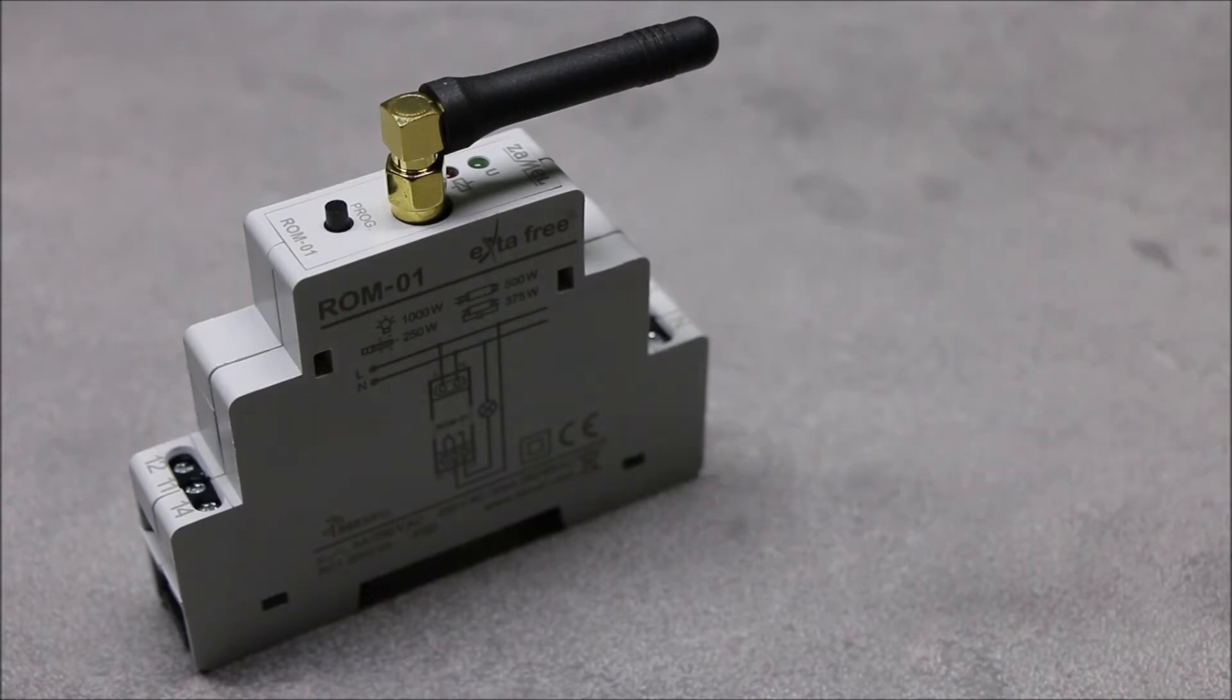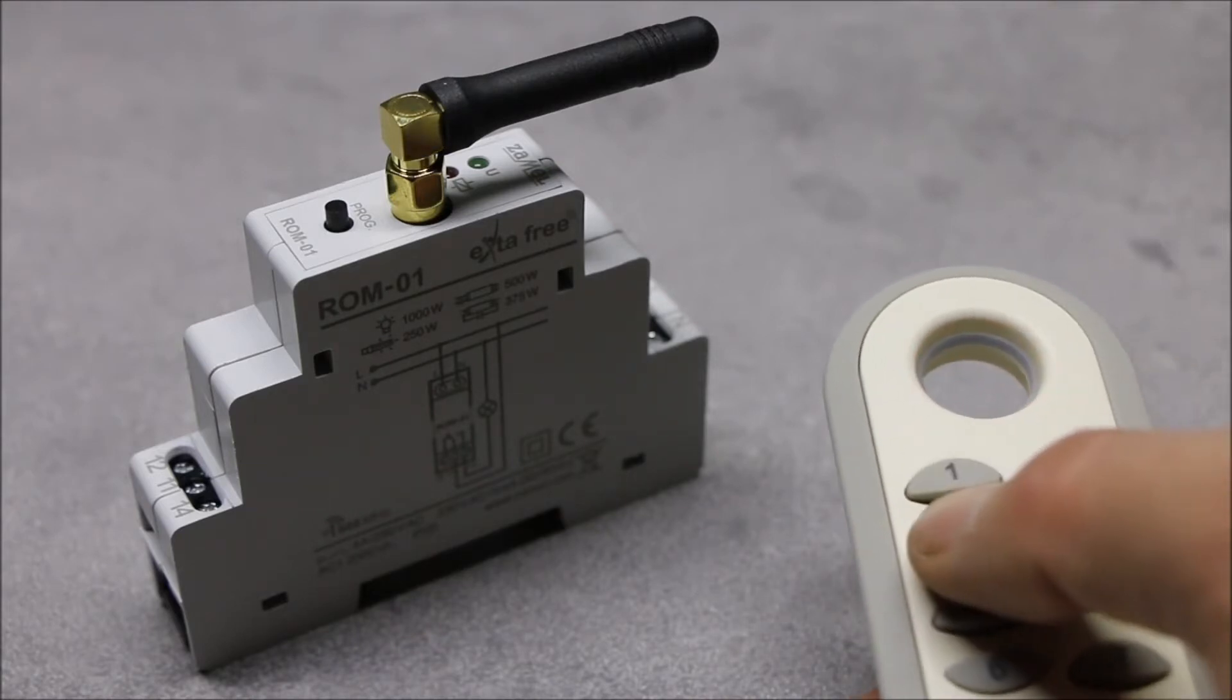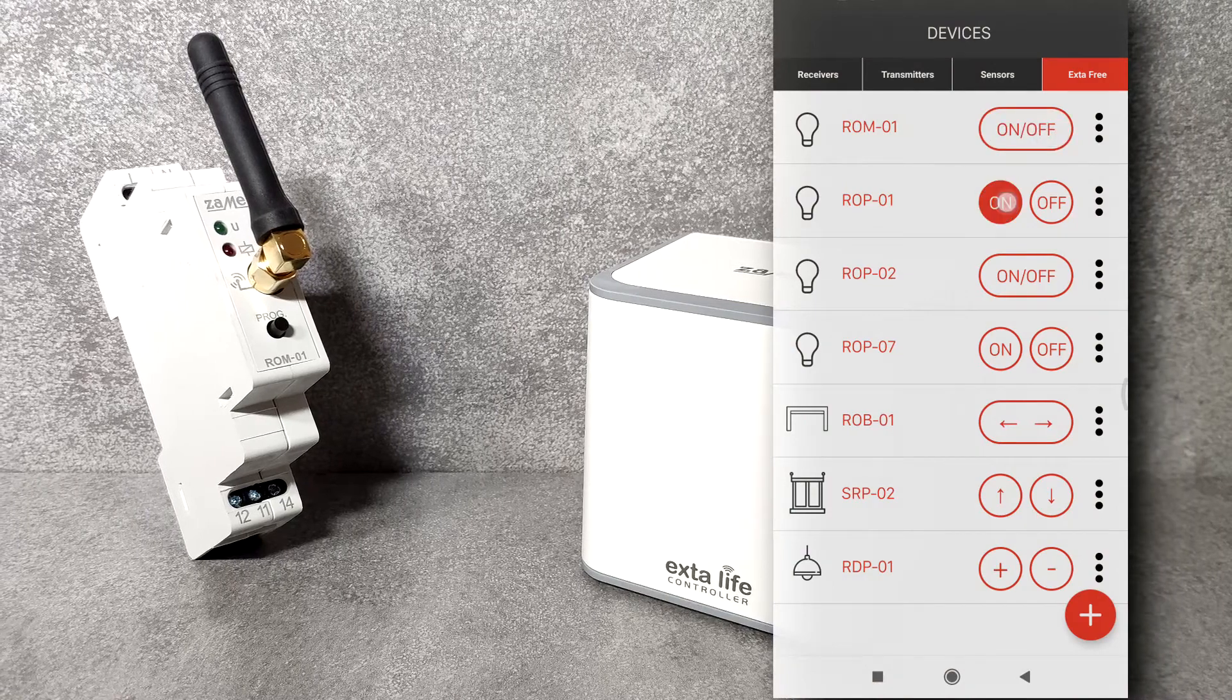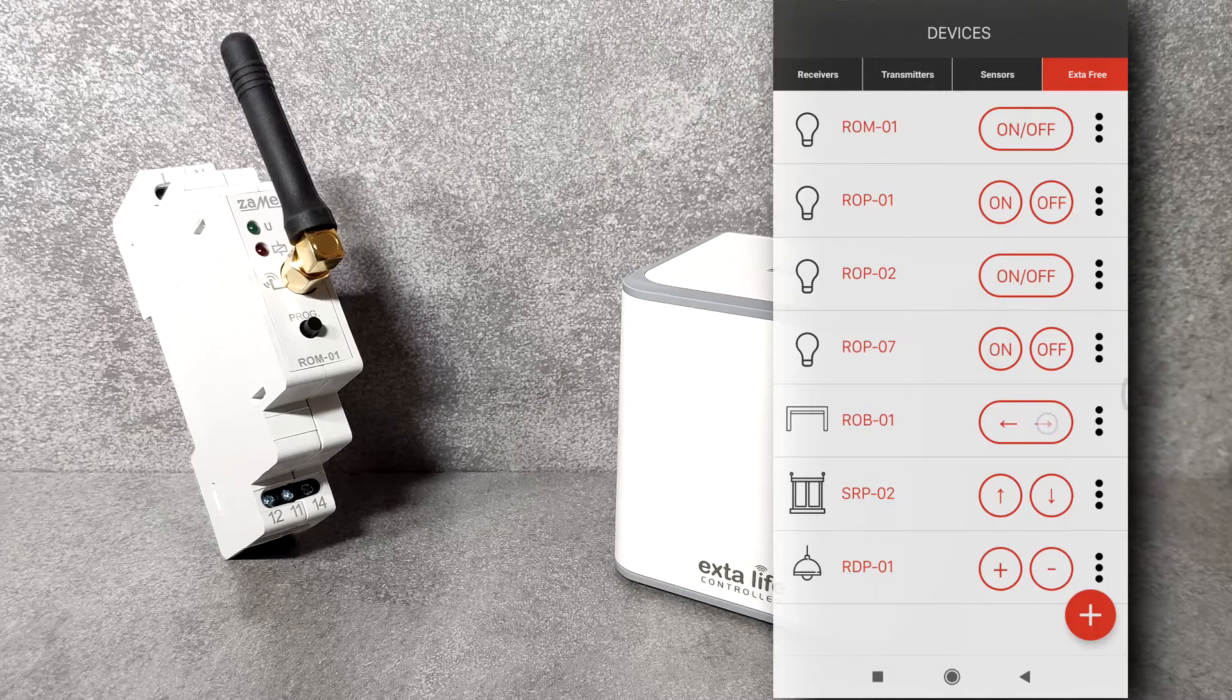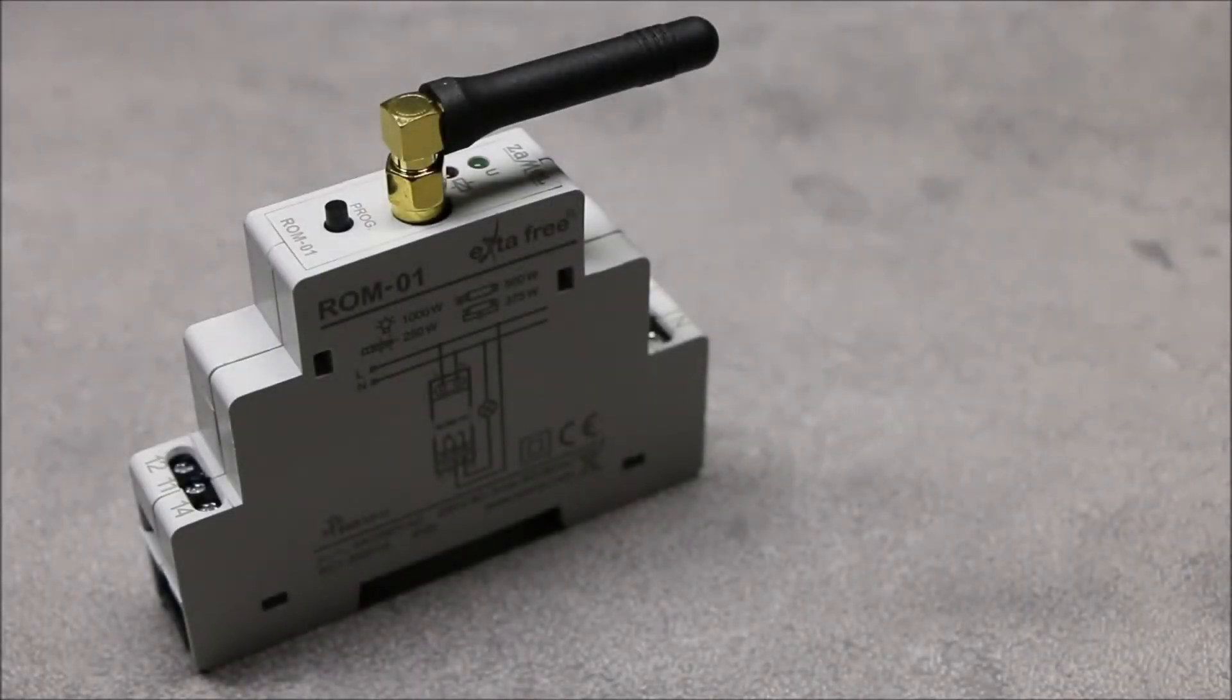The receiver operates with all ExtraFree system transmitters as well as selected radio sensors. While using the central Unity FC-01, control can be carried out by any mobile device equipped with Android or iOS. Transmitters are stored in the receiver's memory, even after power loss.